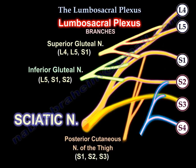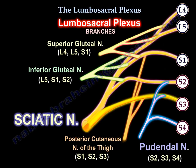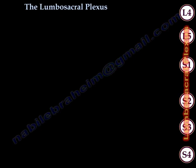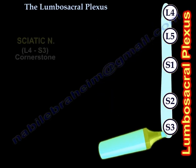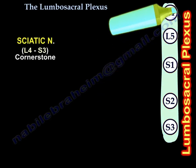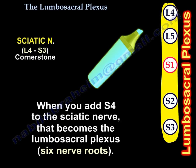The pudendal nerve comes from one nerve lower — S2, S3, and S4. The lumbosacral plexus starts from L4 to S4. The sciatic nerve starts from L4 to S3, and when you add S4 to the sciatic nerve, that becomes the lumbosacral plexus. You now have six nerve roots in total.